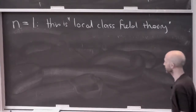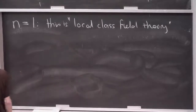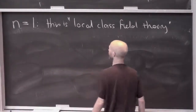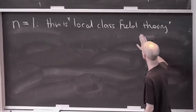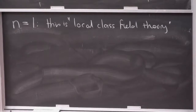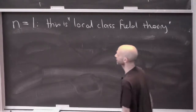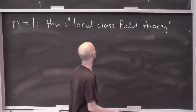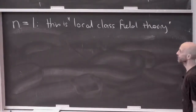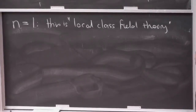Local class field theory has a slightly funny history worth telling. The main theorems of global class field theory were proved around the early 1900s, before p-adic numbers had even been invented or discovered. Then p-adic numbers and local fields were studied, and people proved local class field theory by deducing it from the global results they already had. It was only much later that people realised a more natural approach is to prove the local statements first and make the global deductions from them — that happened over a period of about 50 years, beginning of the last century.